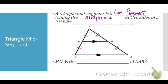So in this diagram, line segment MN is the mid-segment of triangle ABC because I have midpoint M and midpoint N, joined by that line segment MN.